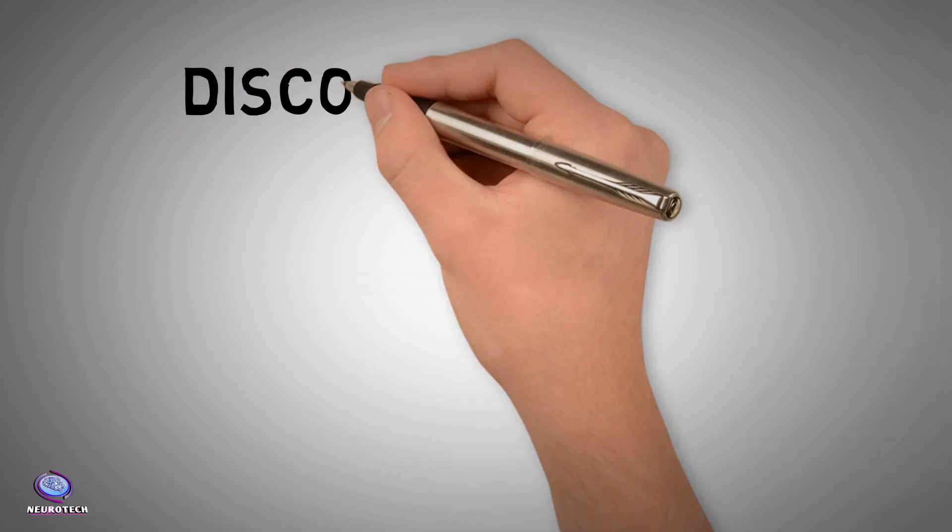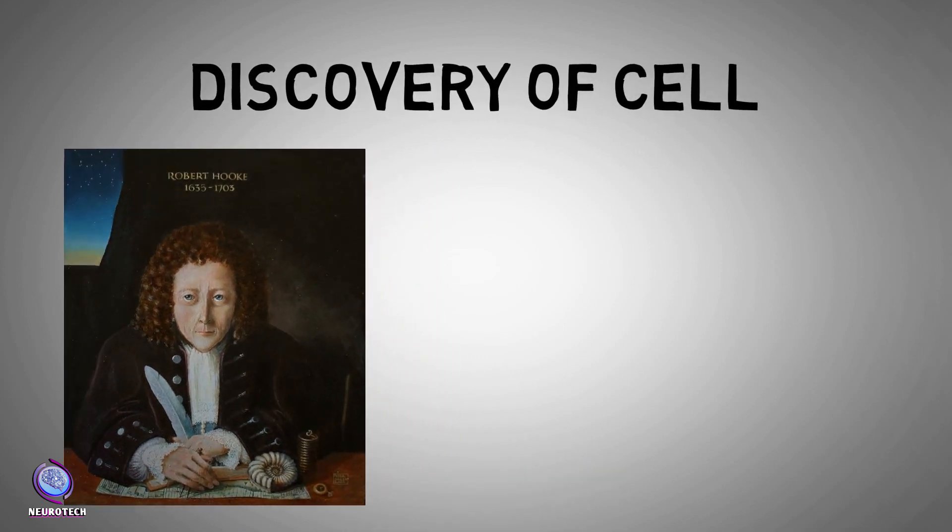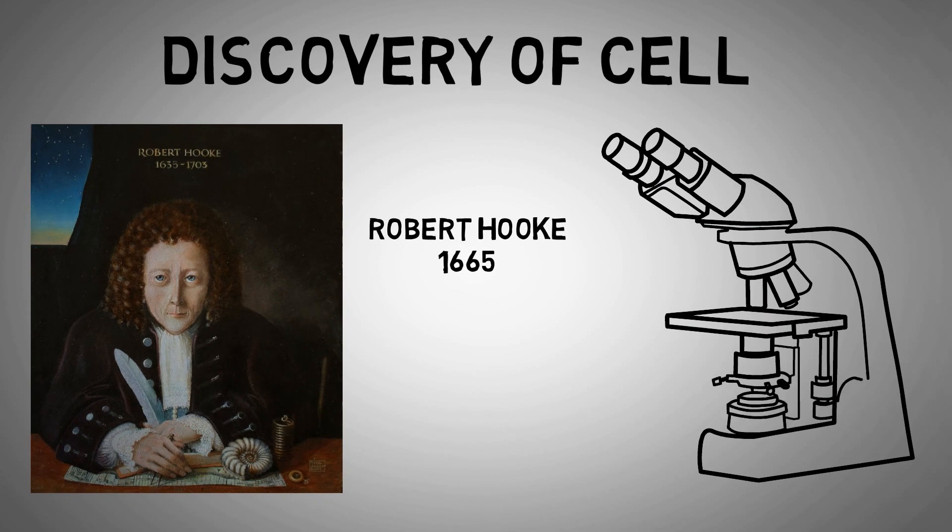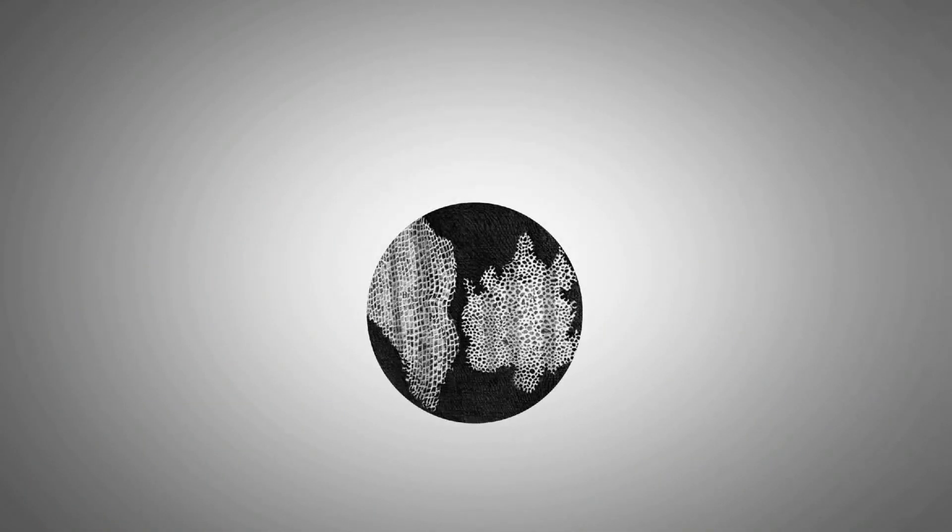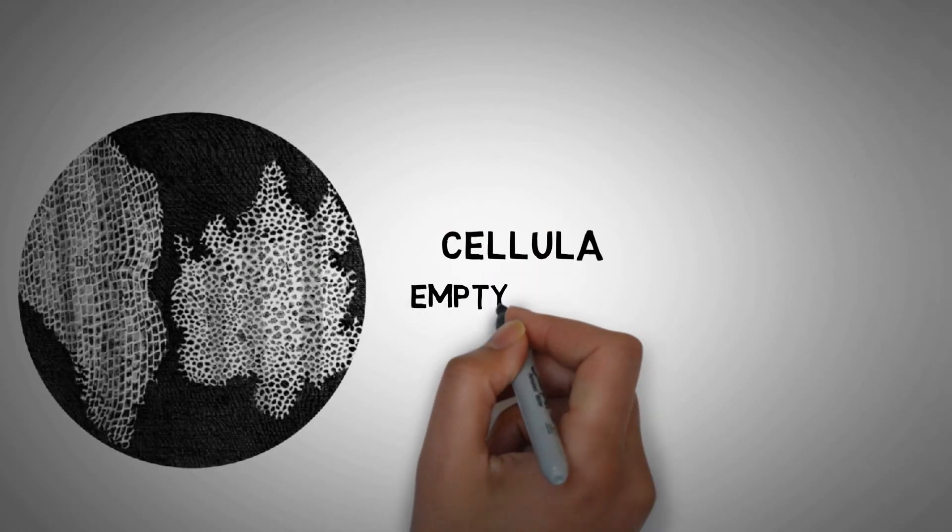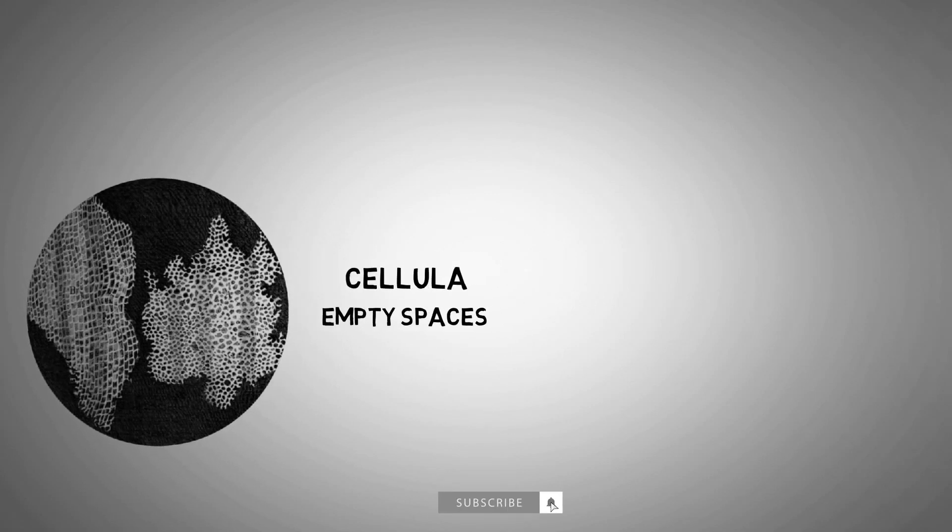Discovery of cell: The cell was discovered by Robert Hooke in 1665 under the microscope from cork cells. He saw small rooms, and he called them cellula, which means empty spaces. But we know today that cell is not an empty space.